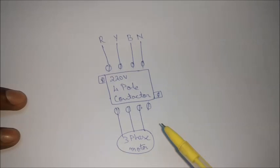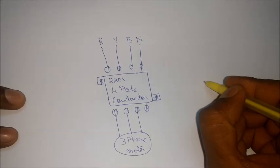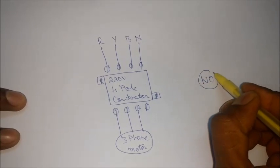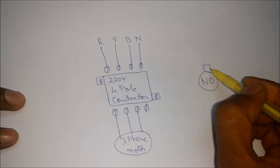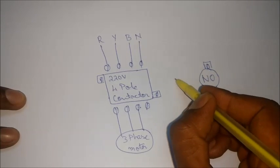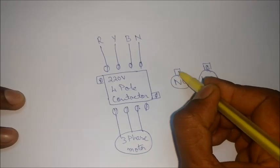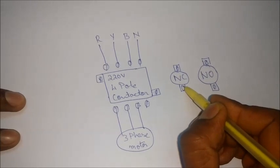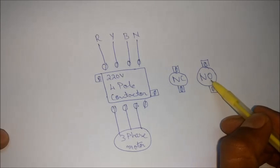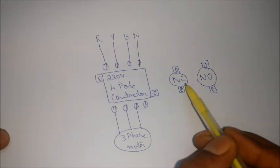But how do we activate the solenoid? For this, we require 2 switches: the NO switch which consists of 2 terminals, and the NC switch which also consists of 2 terminals. The NO switch is nothing but a normally open switch, and NC is normally closed switch.